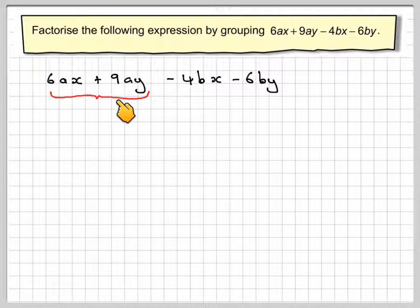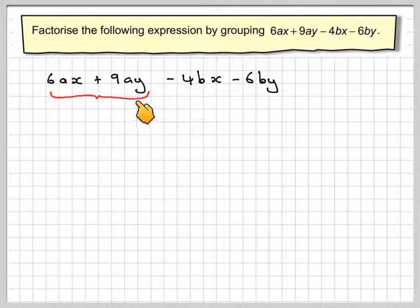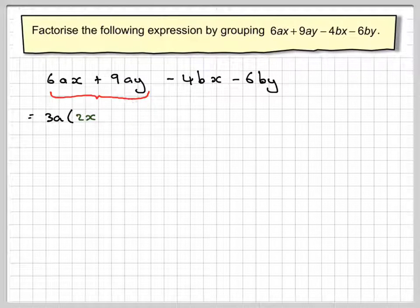Now, let's look at 6ax and 9ay. What are the common factors? Well, 3 goes into both 6 and 9, and a is also a common factor. So, we're going to have a common factor of 3a. We open up a bracket. What we've got left are 2x from here and then 3y from here.